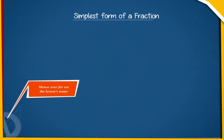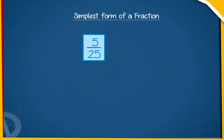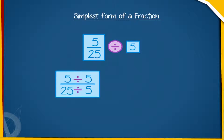Simplest Form of a Fraction: If 1 is the HCF of the numerator and denominator of a fraction, then the fraction is said to be in its simplest form. Take the fraction 5 by 25. The HCF of both 5 and 25 is 5. When we divide both 5 and 25 by 5, we get 5/5 upon 25/5, which equals 1 by 5. Hence, 5 by 25 in its lowest form can be written as 1 by 5.